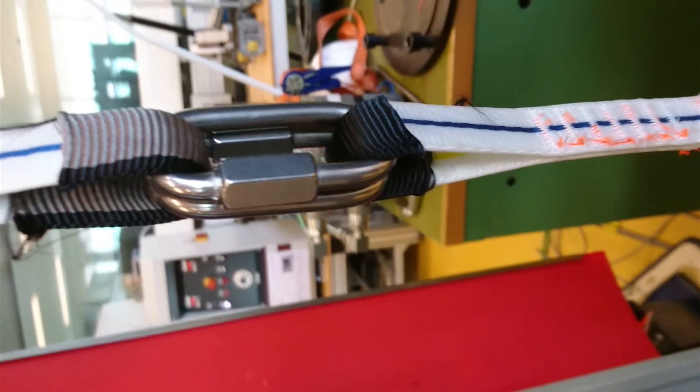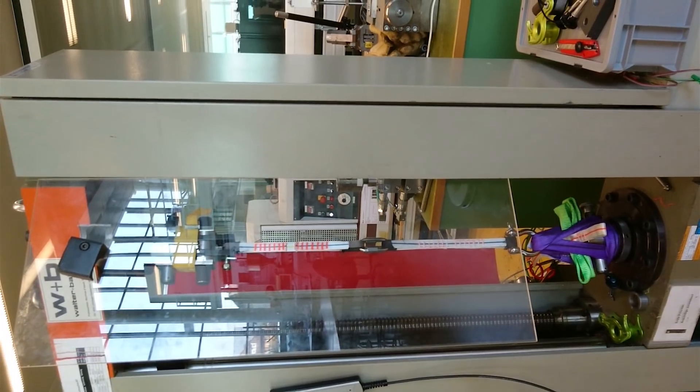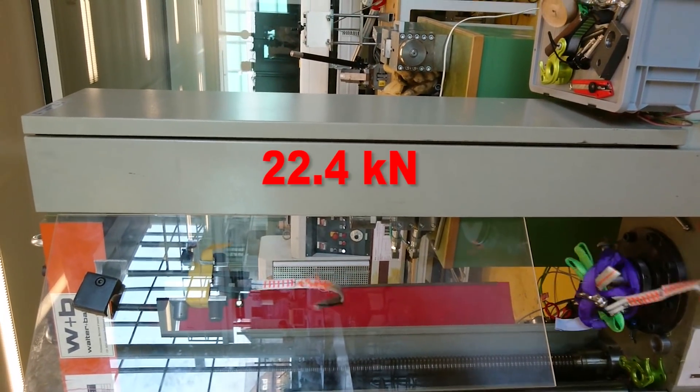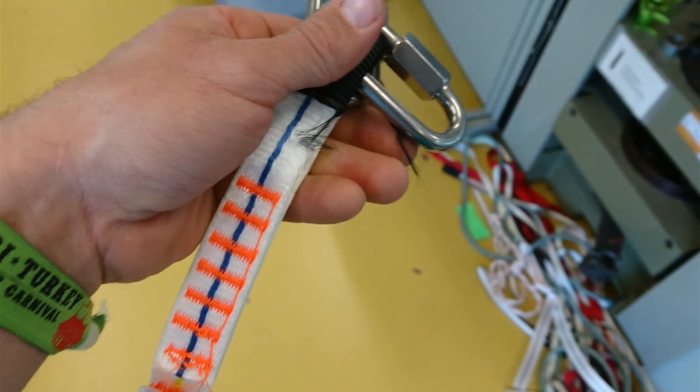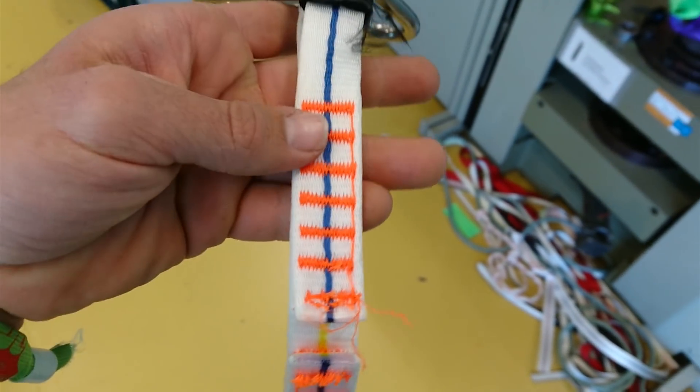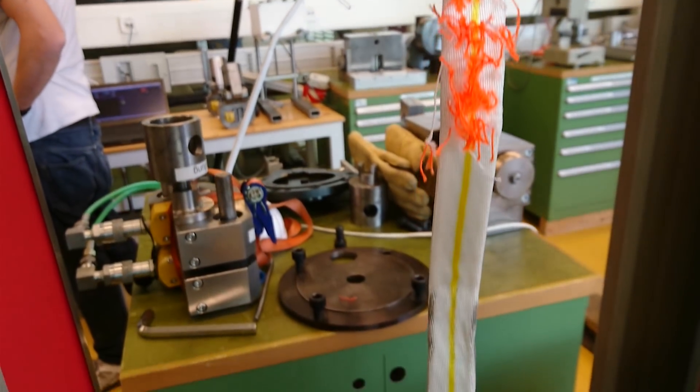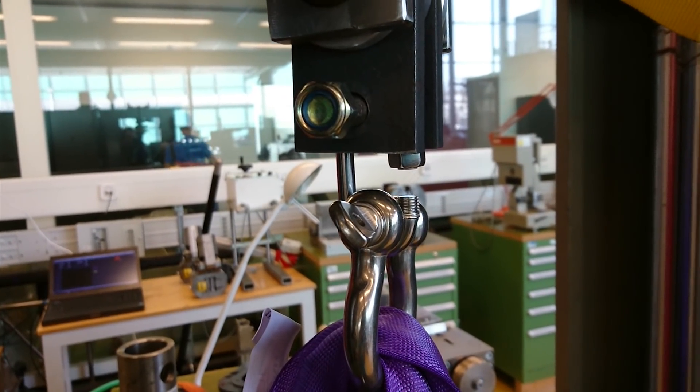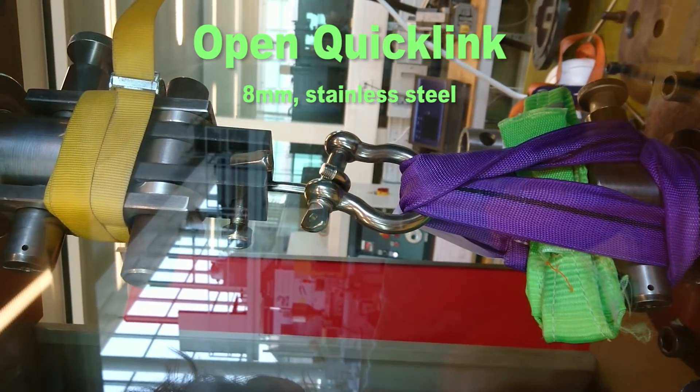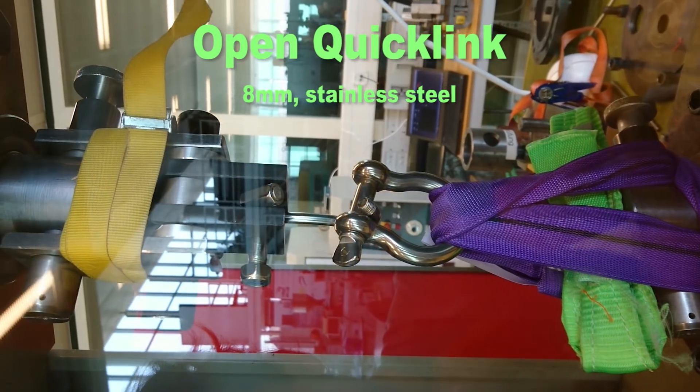This is how I'm going to connect my highlines in the future because I don't have such long webbing. I take two quick links to connect it and we reach a force of more than 22 kilonewtons. What actually tore apart is the stitching here. The next test is an open quick link destruction compared with a closed quick link destruction.